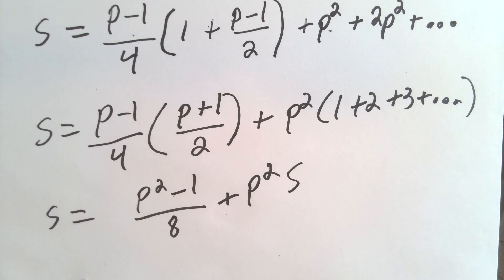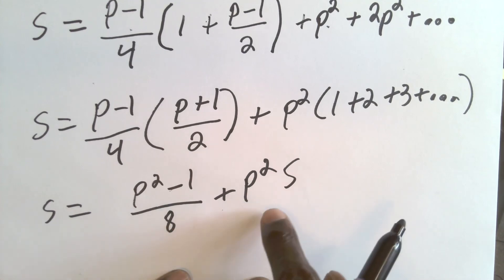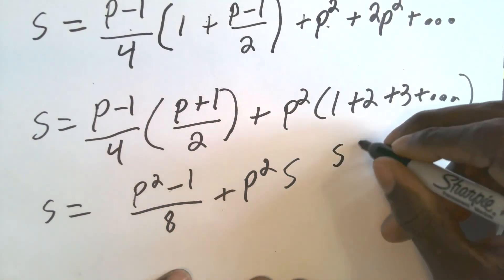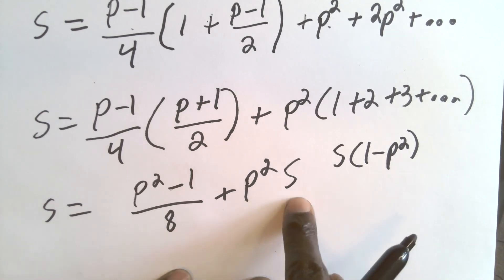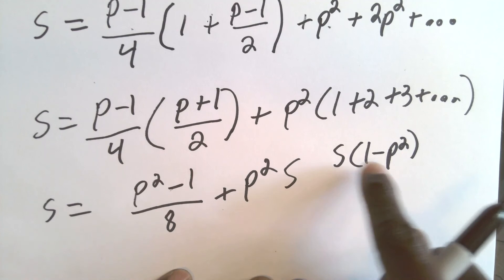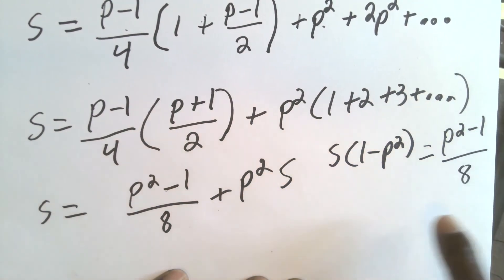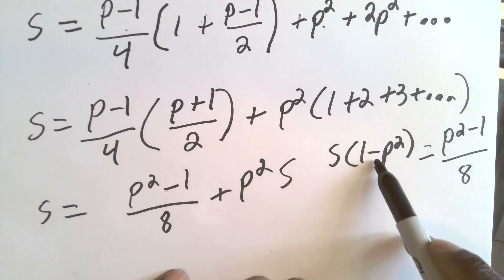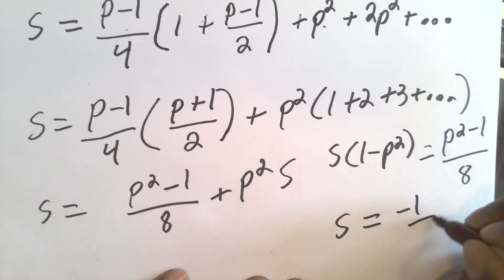Getting all S's on one side: subtracting P squared S from both sides gives S times (1 minus P squared) equals (P squared minus 1)/8. To solve for S, divide both sides by (1 minus P squared). Since (1 minus P squared) and (P squared minus 1) are negatives of each other, dividing gives negative 1. Therefore S equals negative 1 over 8.